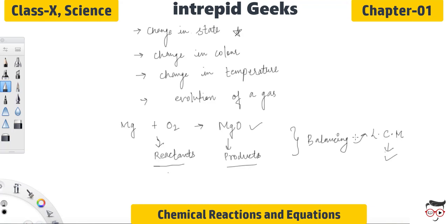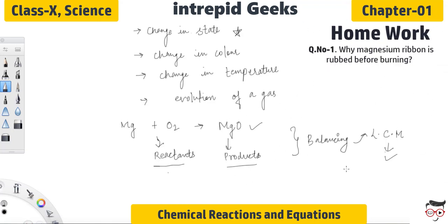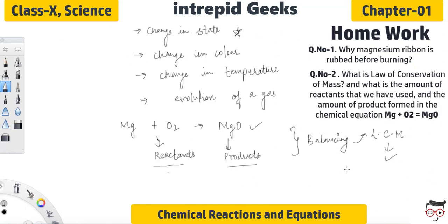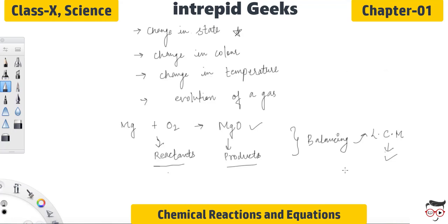This is all about today's session. So you have two questions for your homework. The first question is why we rub magnesium ribbon before burning and the second question is what is law of conservation of mass and what is the amount of reactants that we have used and the amount of product formed in the chemical equation Mg plus O2 which is giving out MgO. I hope you have understood the concepts. In next session we would be discussing the balancing of chemical equations and the properties of a chemical reaction. Thank you for watching this session. Please complete your homework before watching the next video.